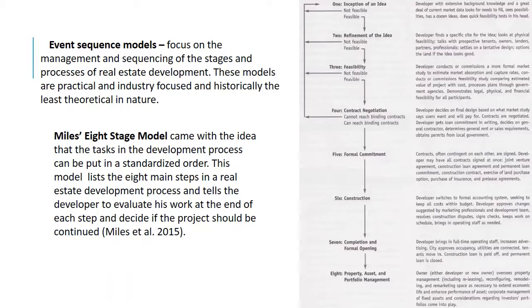After looking into actors and economic models, we started making event sequence models. These models focus on the management and sequencing of stages and processes in real estate development. They are practical, industry-focused, and historically the least theoretical. Miles's eight-stage model came with the idea that tasks in the development process can be put in a standardized order, listing eight main steps and telling the developer to evaluate work at the end of each step and decide if the project should continue. So far we have our actors, our finances, and now we have the order of things.